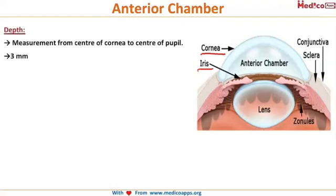The depth of the anterior chamber is 3 millimeters. This measurement is taken from the center of the cornea to the center of the pupil, which gives you the depth of the anterior chamber — 3 millimeters.